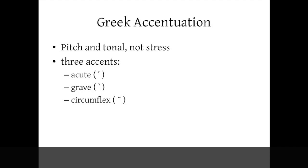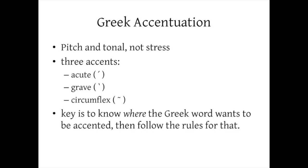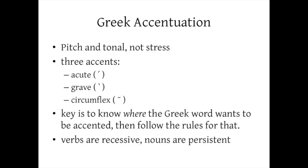The key to understanding Greek accentuation is to first know where the Greek word wants to be accented, then follow the rules for that placement — this will become clear in just a few minutes. The general rule for accents is that verbs are recessive while nouns are persistent. Recessive means the accent wants to go back as far as possible, as close to the beginning of the word as possible, which in Greek means the third syllable from the end. So every verb wants to be accented on the third syllable from the very end.